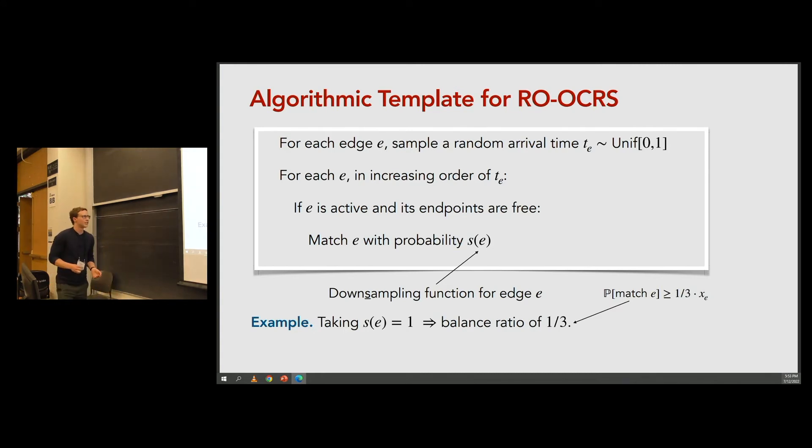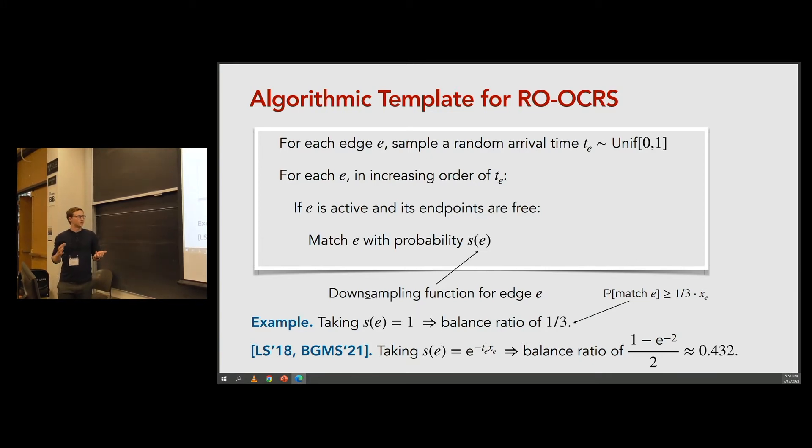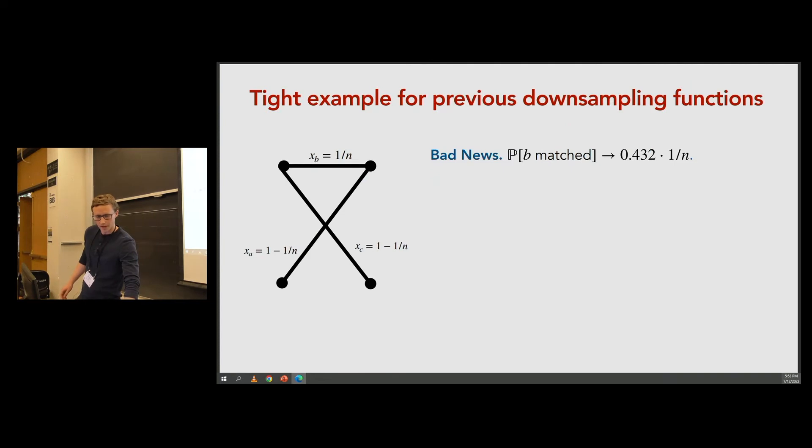To get a little bit of intuition, maybe the most basic thing you could do is take S(e) to equal 1 for every edge. So it's like a greedy algorithm that just accepts active edges. This gets a balance ratio of one third. Prior work has found different down sampling functions that achieve significantly improved balance ratios. This was the prior best bound, and multiple works achieved it. One such function that does it is e^(-t_e * x_e), which achieves this 0.432. Unfortunately, all of these previous down sampling functions, the analysis was tight. So we really need a new algorithm if we want to improve on them. They're shown to be tight by this simple path on three edges, where the middle edge B has very small x value and gets matched with probability approximately 0.432 times x_B, or probability approaching that.